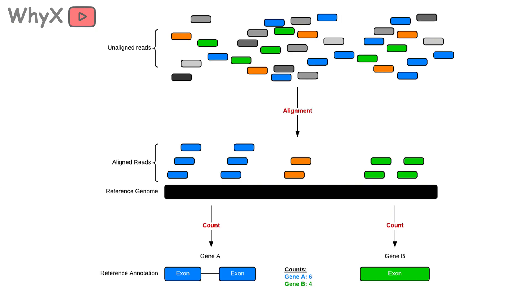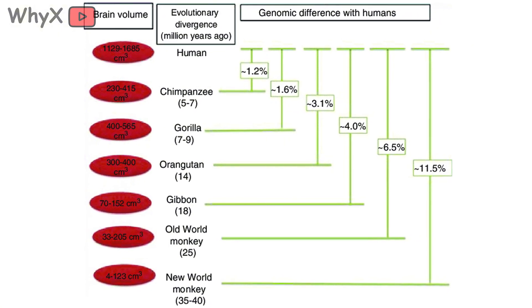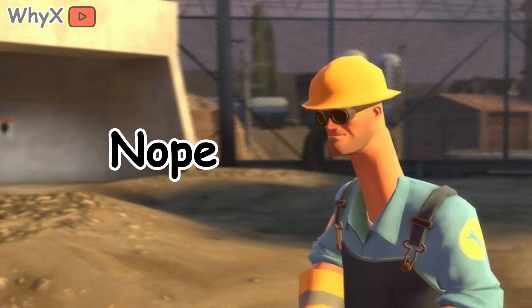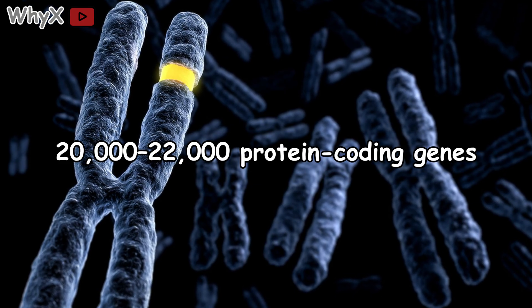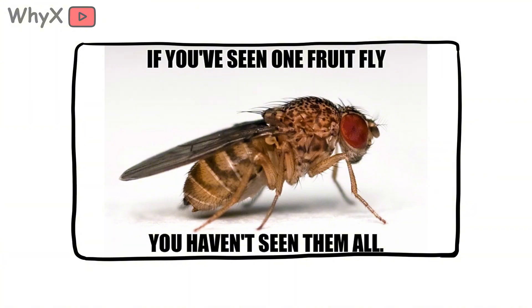Then there's the strange reality of gene count. You might think humans, being so complex, have way more genes than other species. Nope, we have about 20,000 to 22,000 protein-coding genes. That's only about 2,000 more than a fruit fly and fewer than some plants.